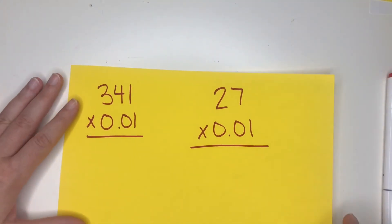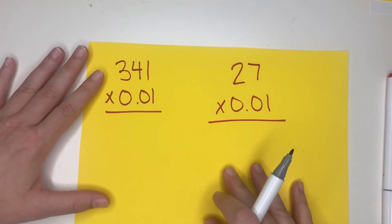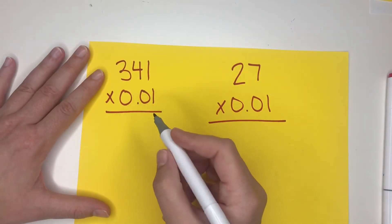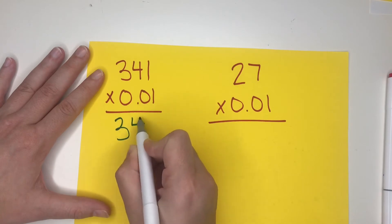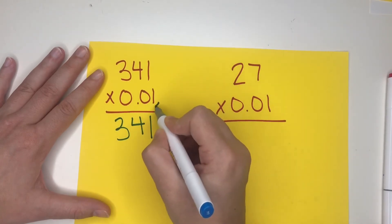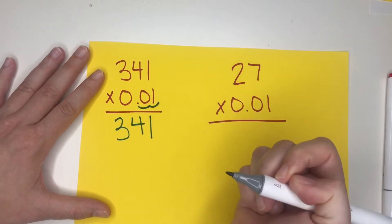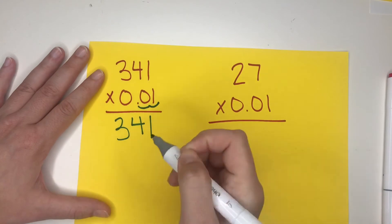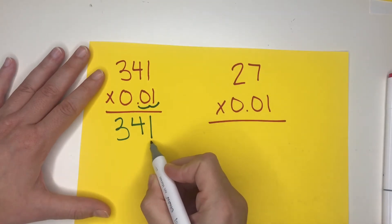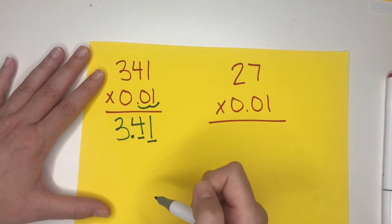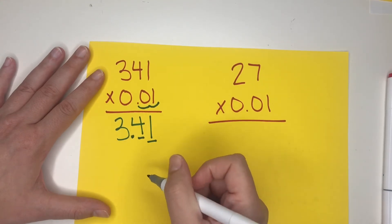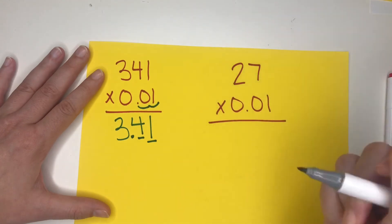Let's just practice with some basic multiplication. I have 341 times one hundredth. My answer is simply going to be 341, and I count my places after the decimal — I move it one and two, because I need two places after the decimal. So my answer is 3 and 41 hundredths.